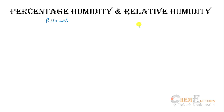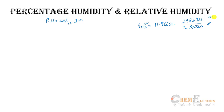Alternatively, percentage humidity can be found analytically using the Antoine equation: log(P_vapor) = 11.96481 − 3984.923 / (T − 39.724), where pressure is in bar and temperature in Kelvin.